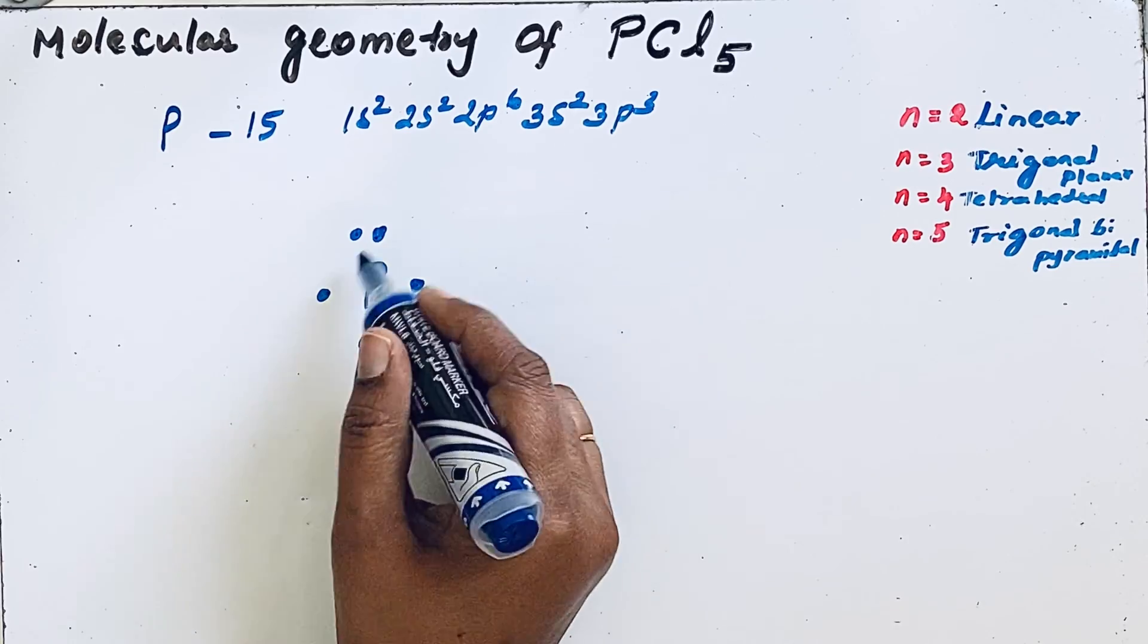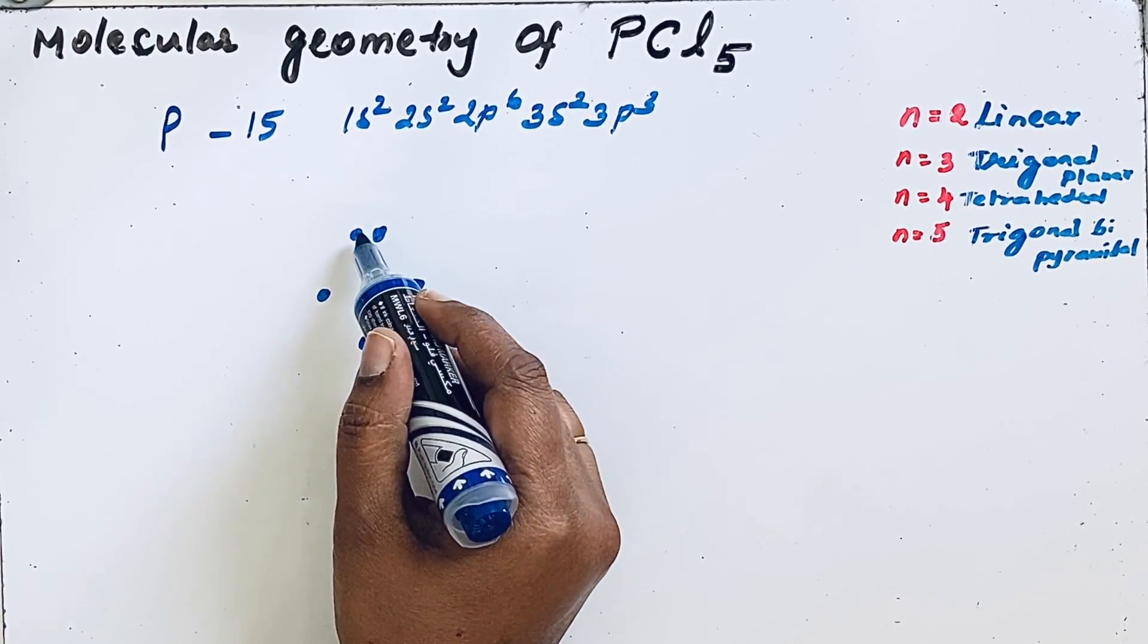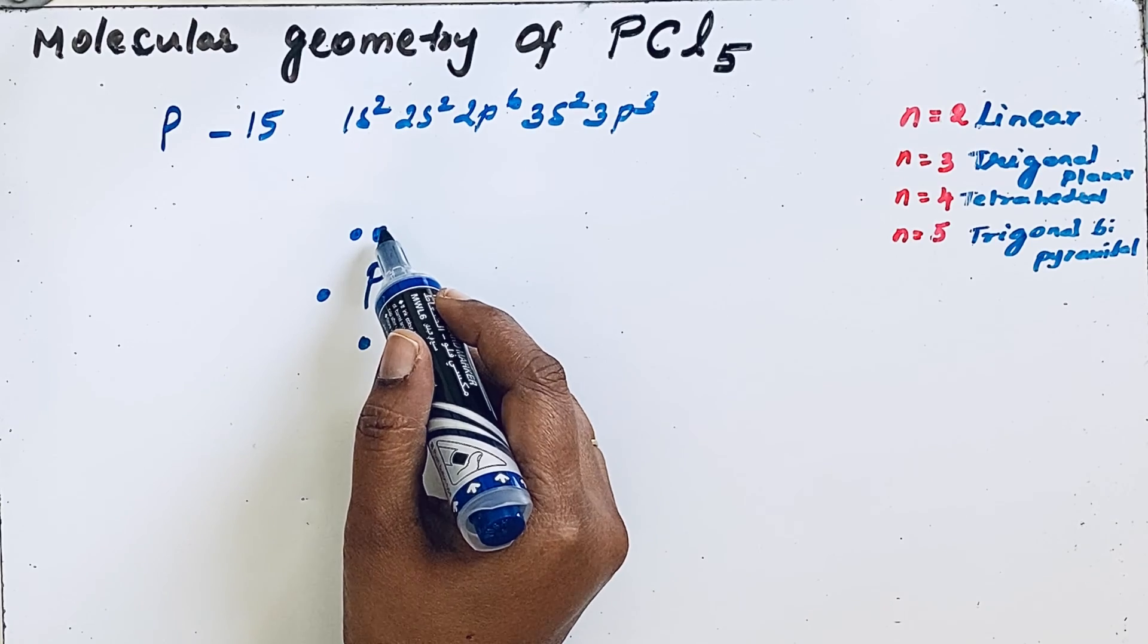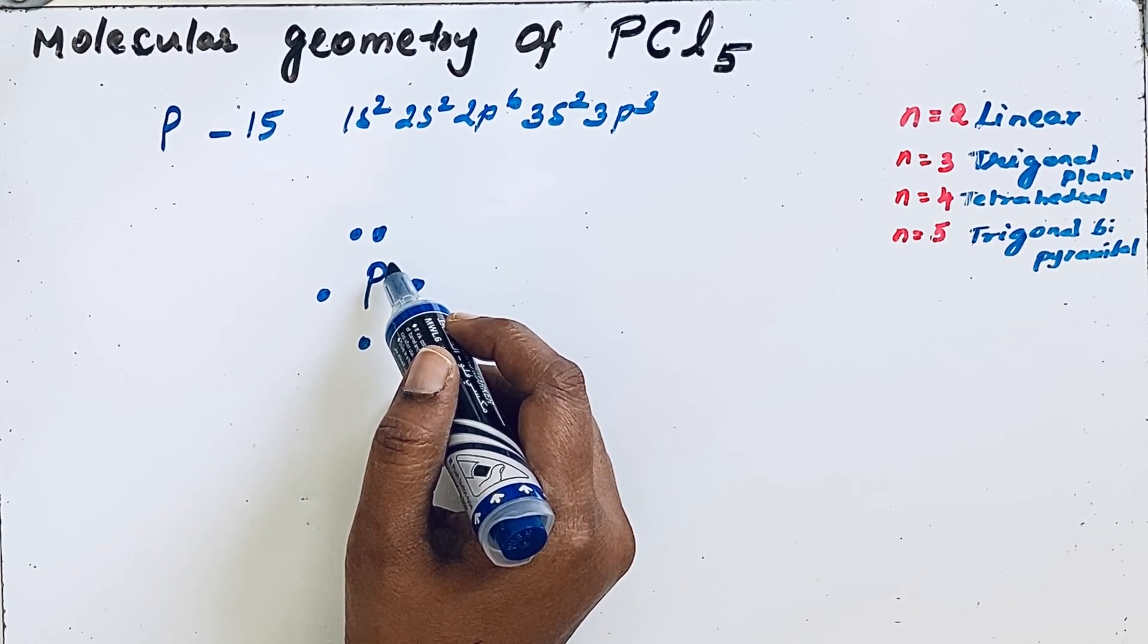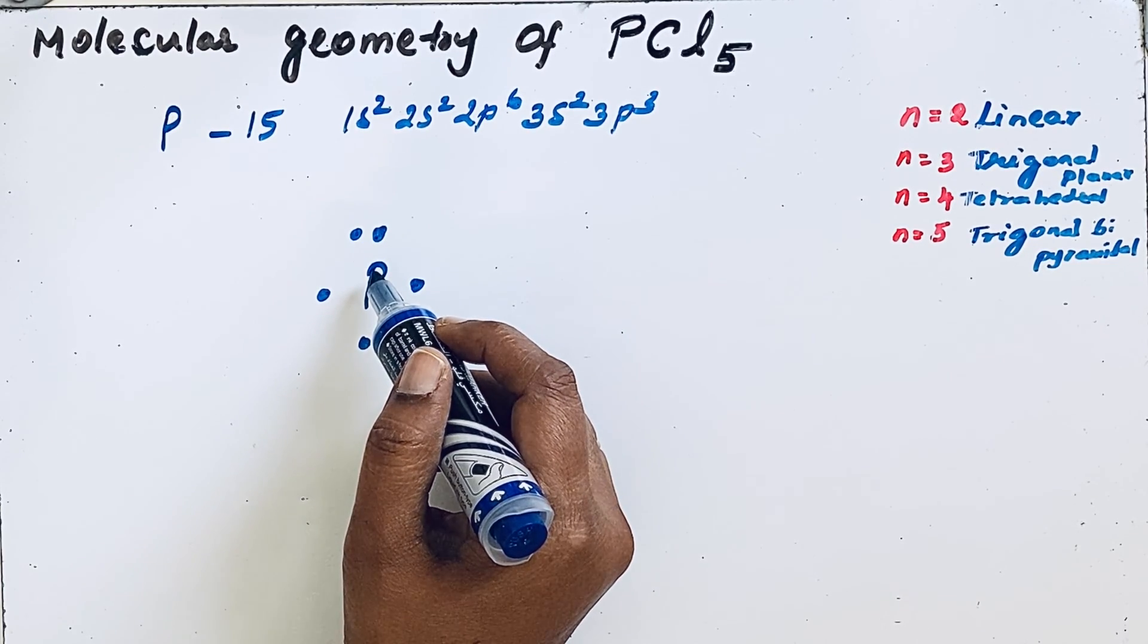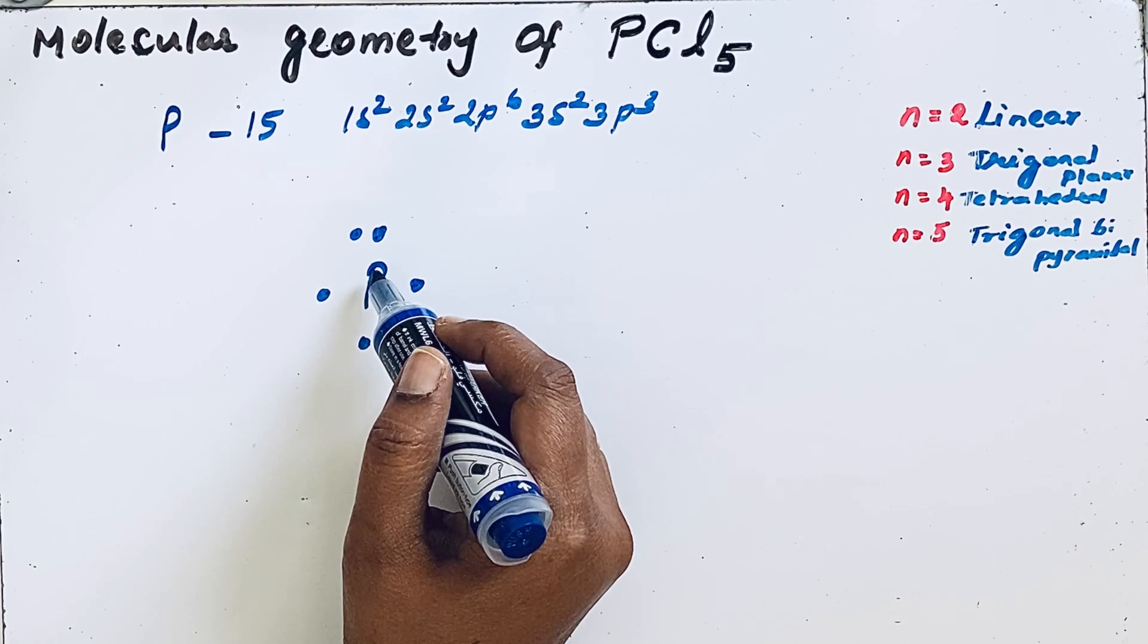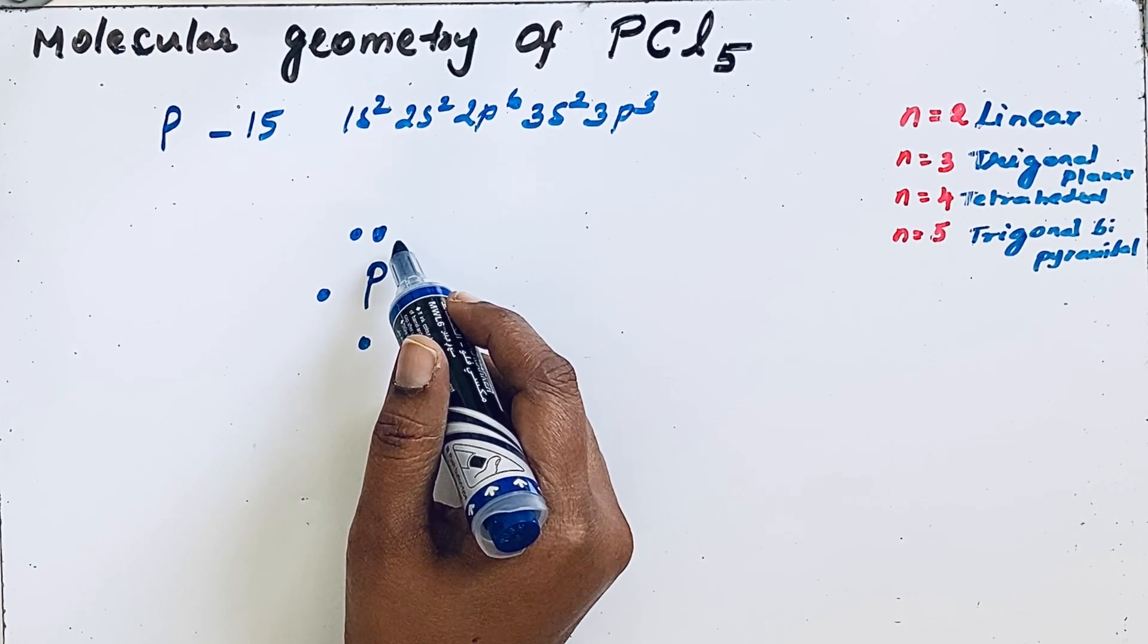Looking at this structure, we may think there are three bond pairs and one lone pair in PCl5 molecule, but this does not happen because phosphorus is in the third period. After the third period, there is availability of d-electrons, so it can expand its octet and form five bonds.